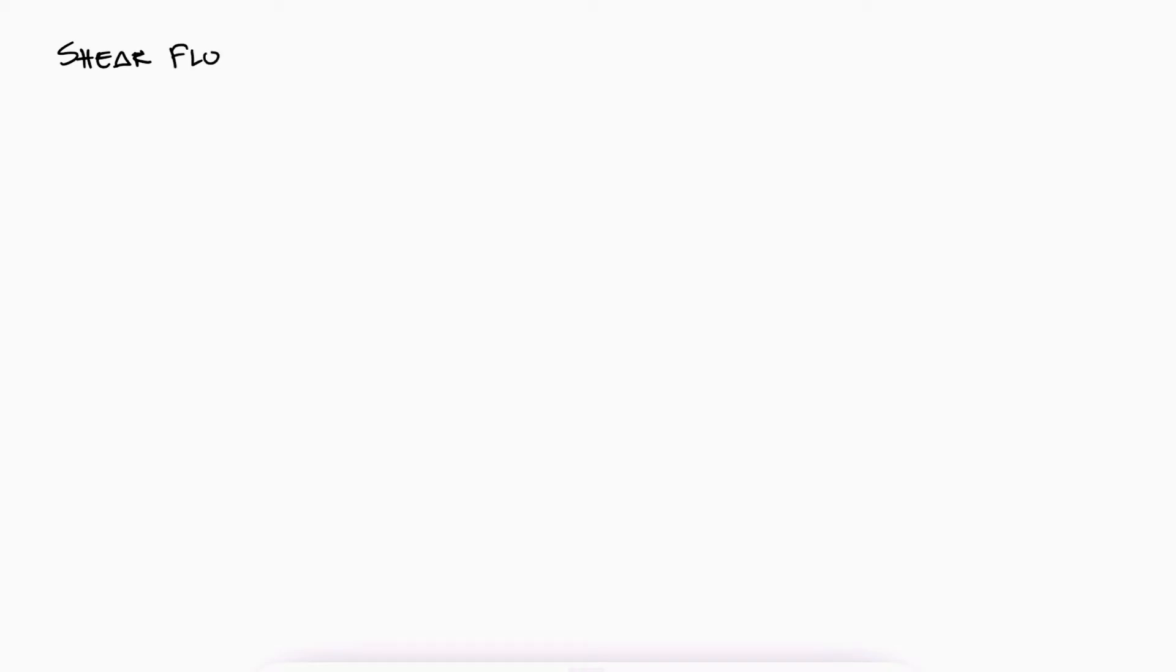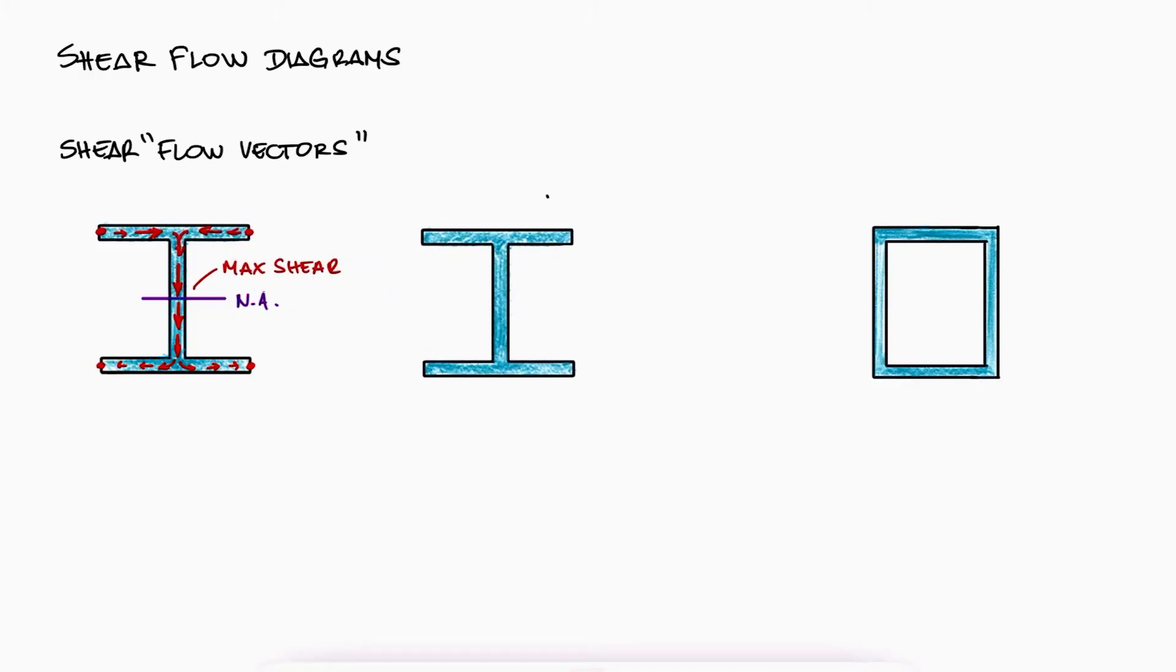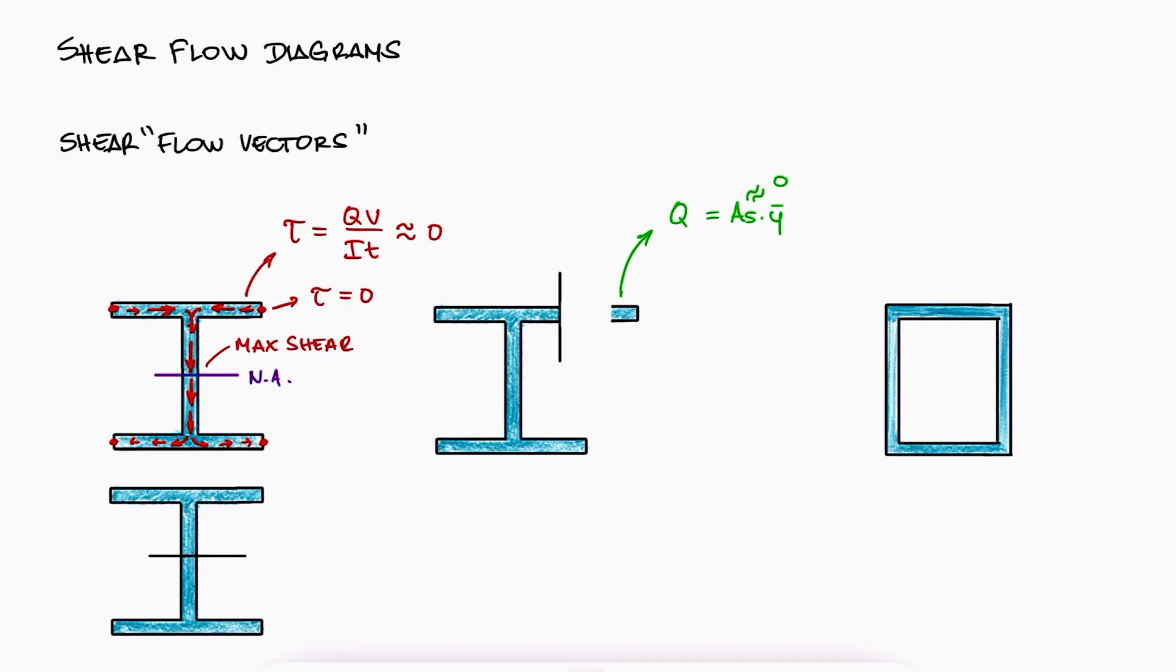The name shear flow comes from the fact that we can draw almost flow vectors of shear, either forces or stresses, from where the shear is zero, increasing through the thin walls to the point where the shear is maximum. For this I-beam example, you can easily see that if we perform a cut close to any of the corners, the first moment of area Q of the remaining area is practically zero, and therefore the stress is zero. If we perform a cut at the neutral axis, Q is largest, and since nothing else is changing, including T, we see that the shearing stress is maximum at that location.